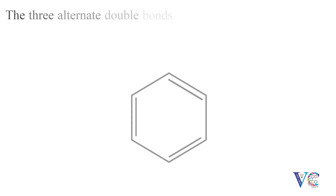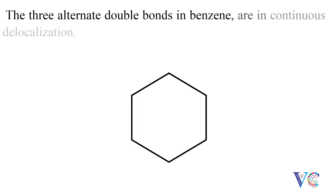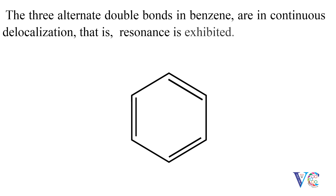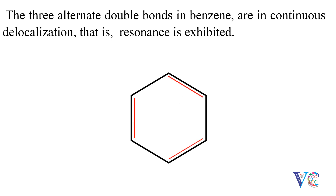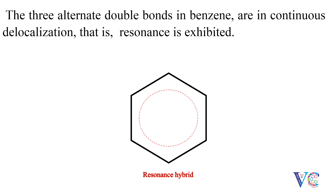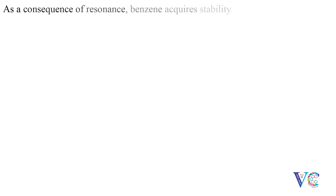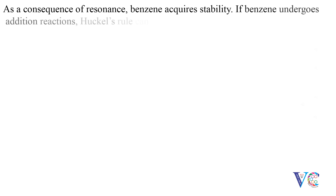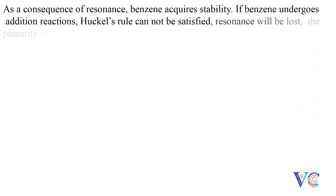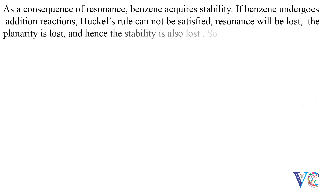The three alternate double bonds in benzene are in continuous delocalization — that is, resonance is exhibited. As a consequence of resonance, benzene acquires stability. If benzene undergoes addition reactions, Huckel's rule cannot be satisfied, resonance will be lost, the planarity is lost, and hence the stability is also lost. So, in order to retain stability, benzene undergoes substitution reactions.